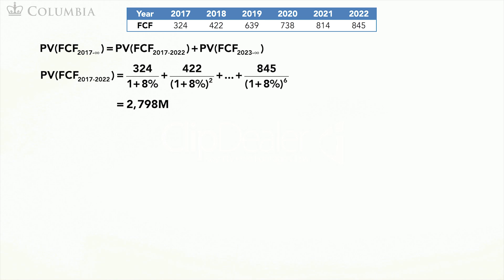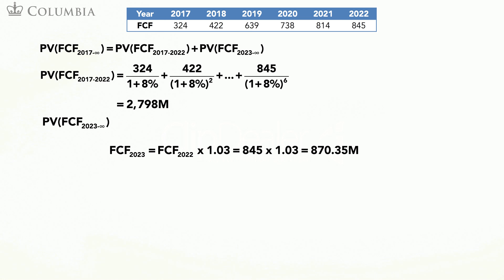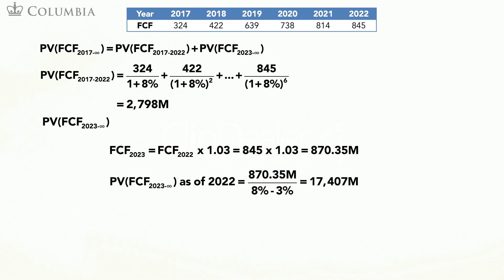Next, I need the present value of the free cash flows that start in 2023. Since we are assuming a growth rate of 3%, the cash flow in 2023 is the free cash flow in 2022 times 1.03. This leads to $870.35 million for the free cash flow in 2023. The following formula captures the present value of the free cash flows from 2023 onwards and gives its value as of 2022.